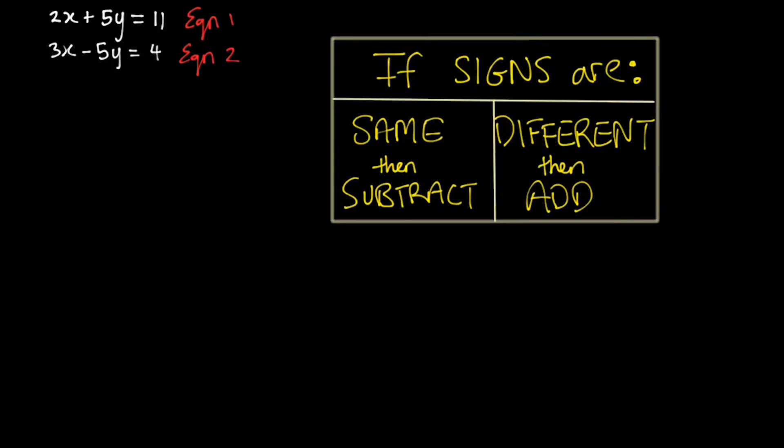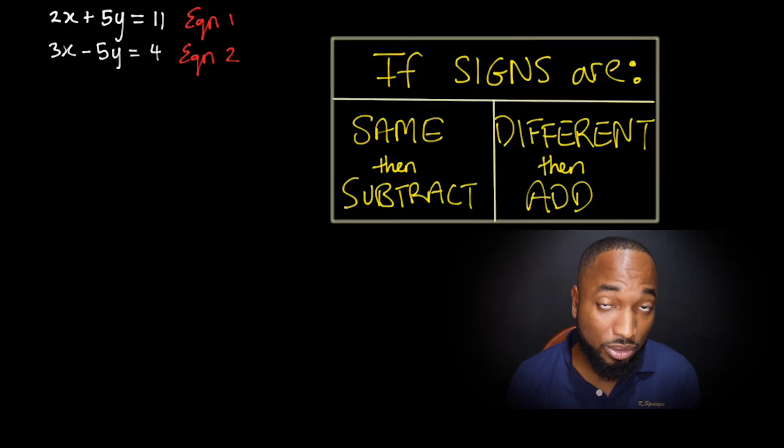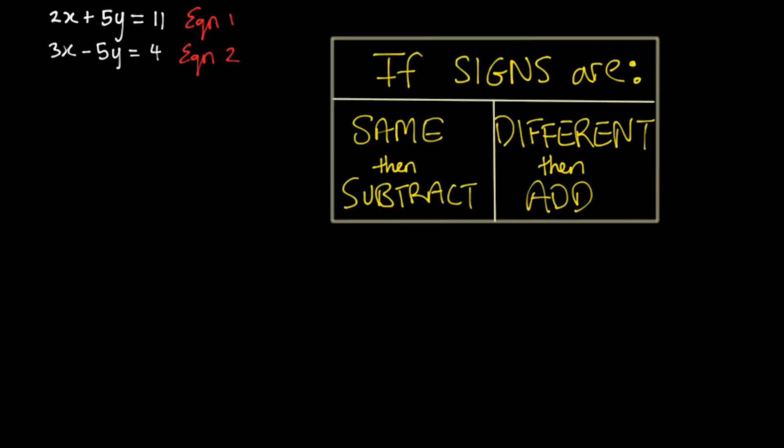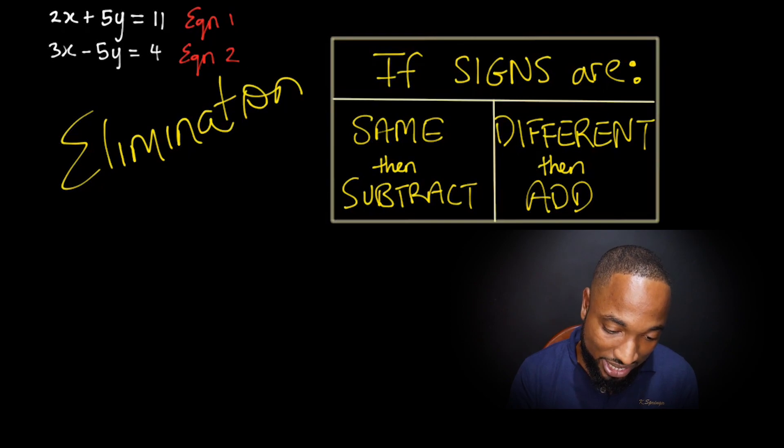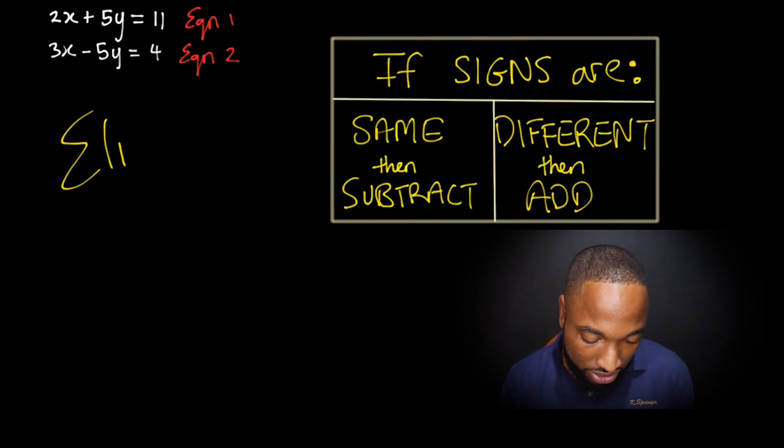This is the rule: if the signs are the same we would subtract, and if the signs are different then we add. What signs are we talking about? The signs on these two numbers—those two numbers are the same, and the whole business about the elimination method is to eliminate a variable.